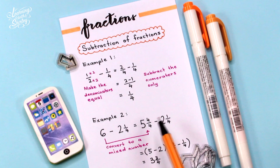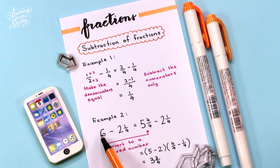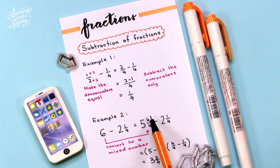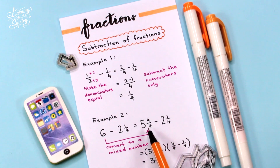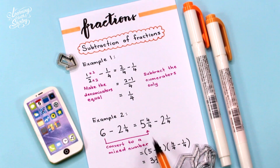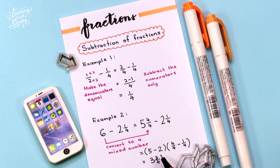Example 2: 6 minus 2 and 1 over 4. First, we convert 6 to a mixed number: 5 and 4 over 4, because 5 plus 4 over 4 equals 6. Then we subtract: 5 and 4 over 4 minus 2 and 1 over 4. We subtract the whole numbers: 5 minus 2, and the fractions: 4 over 4 minus 1 over 4 equals 3 over 4. Therefore, the final answer is 3 and 3 over 4.